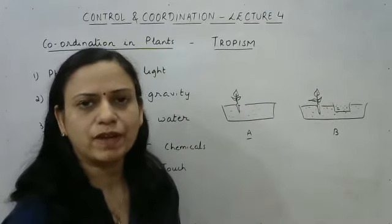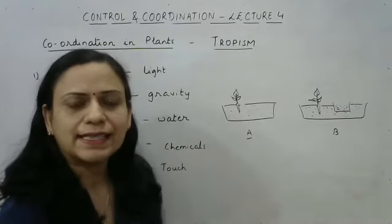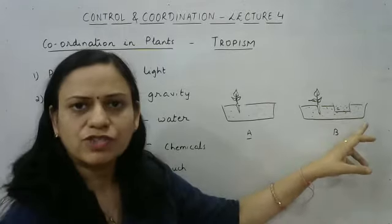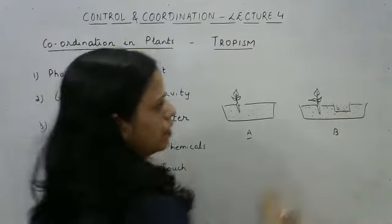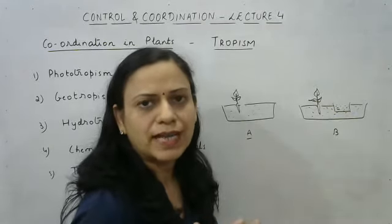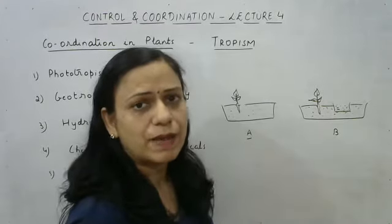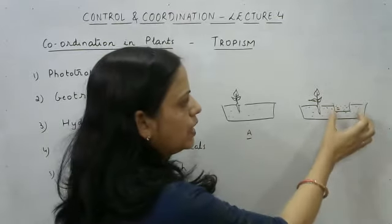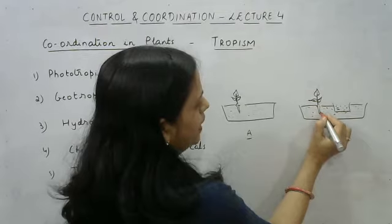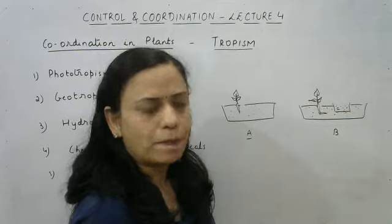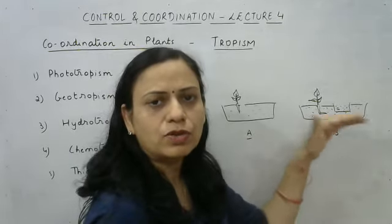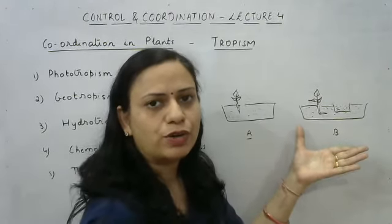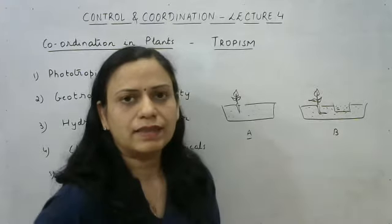After a few days, our observation is that in trough A the plant remains straight — roots and shoot both grew straight. But in trough B, the soil was dry except around the earthen pot. We used an earthen pot, which is porous, so some water seeps out through its walls into the surrounding soil. The root, in search of water, bent towards that moist area — this is an example of positive hydrotropism.